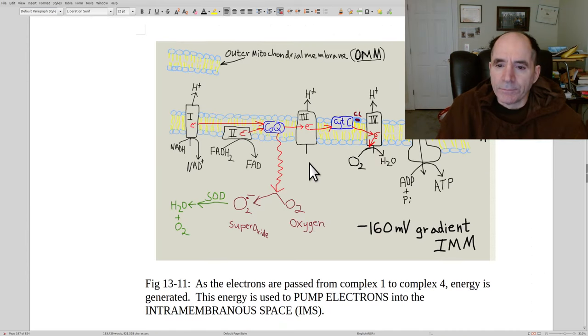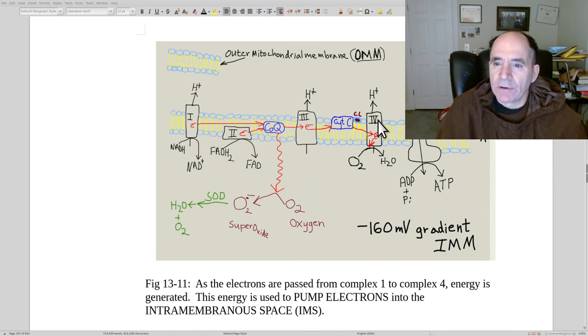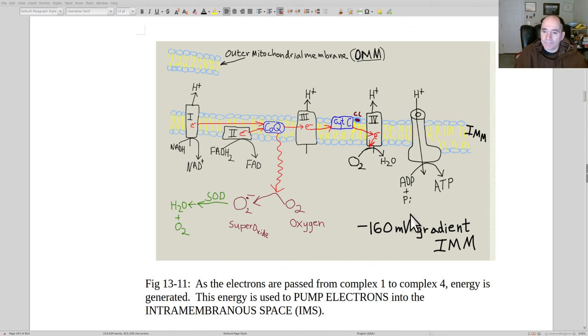The inner mitochondrial membrane gradient is extraordinarily high, like negative 160 millivolts. That's about the highest gradient that I'm aware of in the human body. If you look at neurons, your brain cell plasma membrane gradient is about negative 65 to negative 70 millivolts. This is negative 160 millivolts. That's incredibly powerful. These are like a coal-burning electric plant inside our cells.